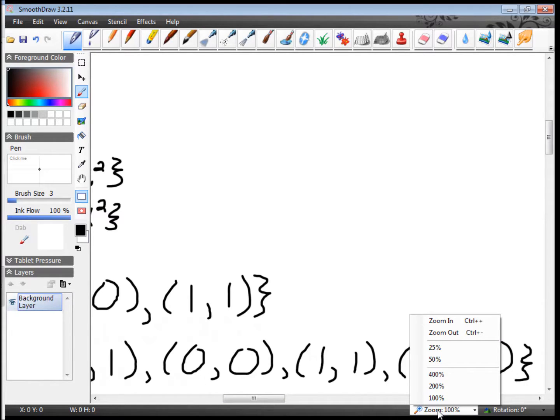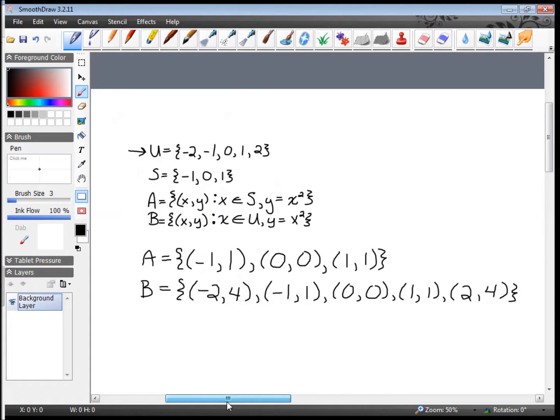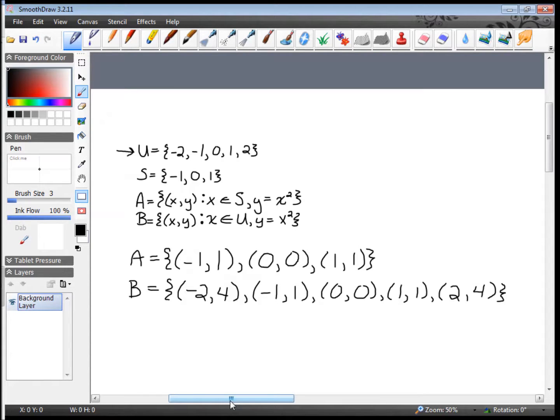So there's our set A and B. Our first question was: Is A contained in B? Well, what this means is, is everything in A also found in B? So let's check this out. Is (-1,1) found in B? Yup. Is (0,0) found in B? Yeah it is. And is (1,1) found in B? Yes. So because all the things that are in A are also in B, this is true.